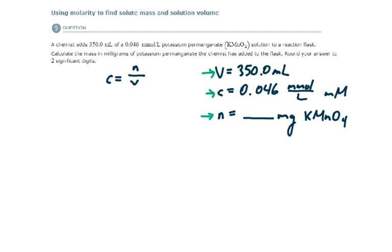We're trying to find this, but we need it in milligrams, not moles, not grams, not kilograms, but milligrams. So let's go ahead and rearrange this formula to solve for n. And it would be n equal to this times this, multiplying both sides by V.